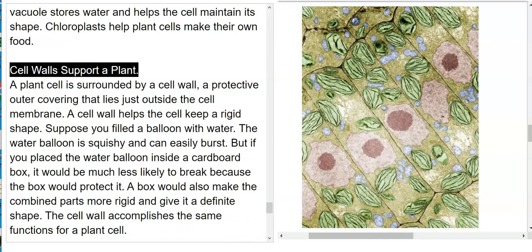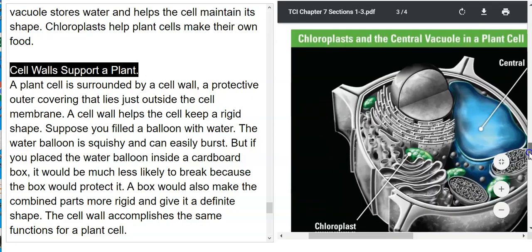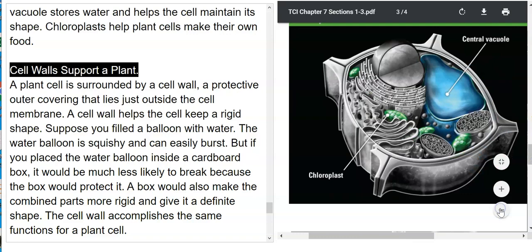Cell walls support a plant. There's the central vacuole, and there's the chloroplast. There's the same structures we found before in an animal cell.